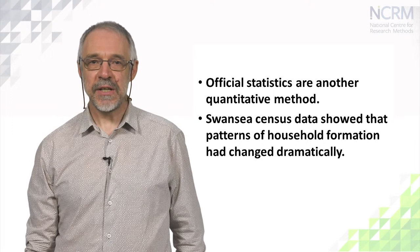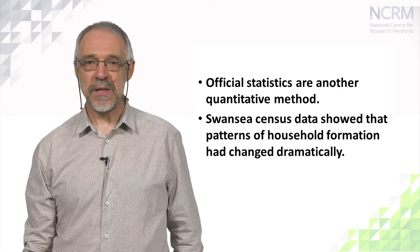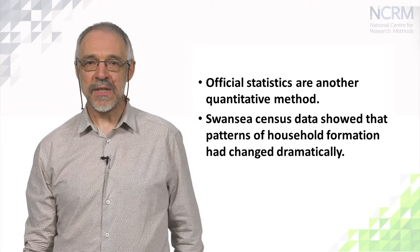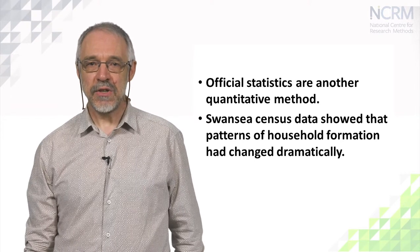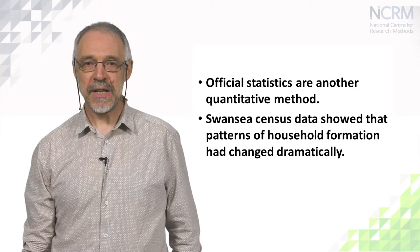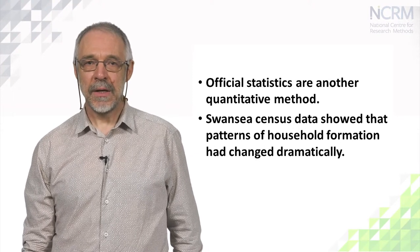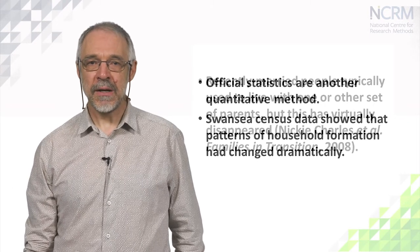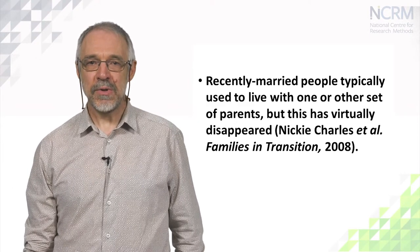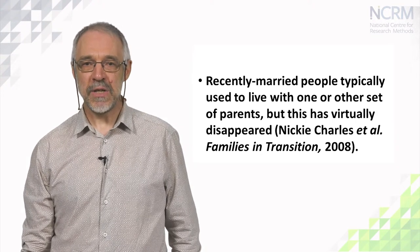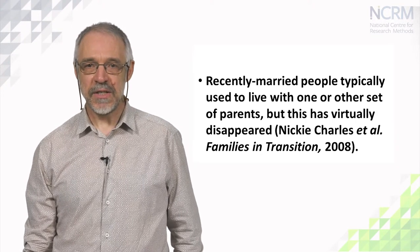Official statistics are another quantitative method that can be very revealing. A study of Swansea used survey data to show that patterns of household formation had changed dramatically within the space of a few decades. In the mid-20th century, it had been statistically normal there for recently married people to live with one or other set of parents, but by the 21st century this had virtually disappeared.